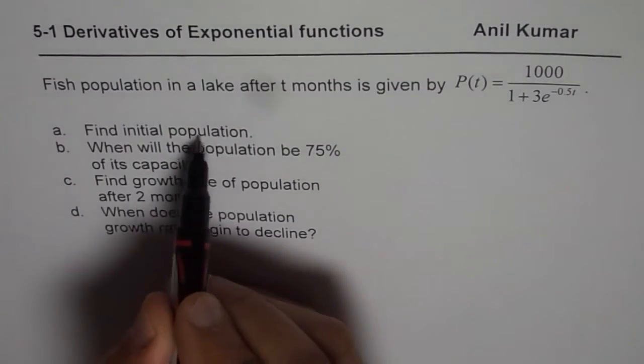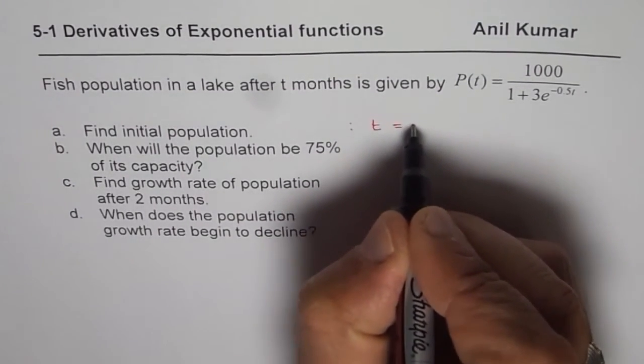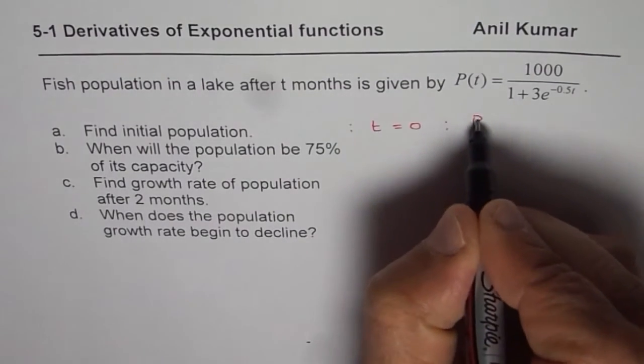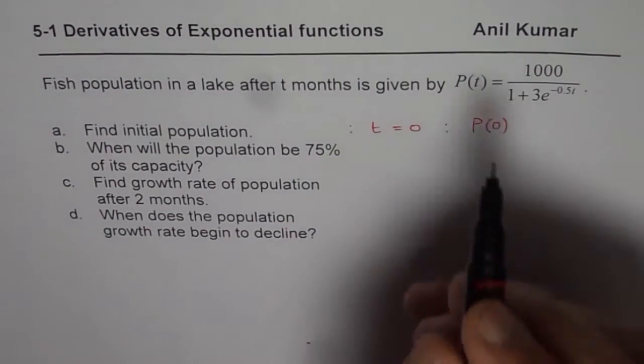So when I say find initial population, it means what? It means t equals 0 or we are trying to find what is P(0). That is what we are trying to find. So let's find initial population.